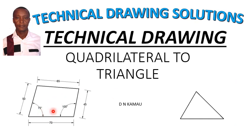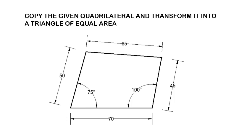So this is a quadrilateral, and you want to convert it to a triangle equal in area to that same quadrilateral. The first thing is to read the question, which says,